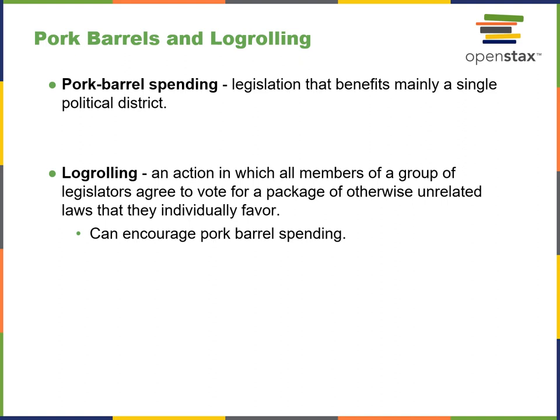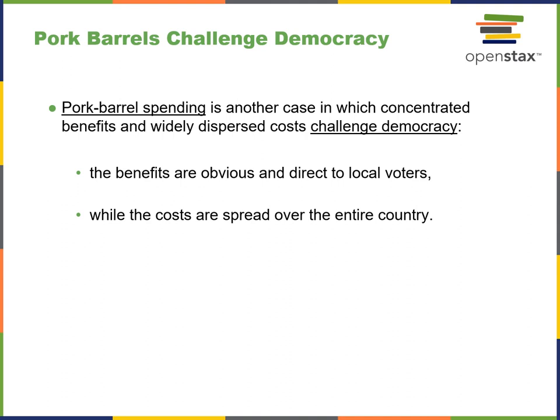Log-rolling is an action where all members of a group vote on a package of otherwise unrelated laws that they favor. This is the ad hoc stuff thrown into a bill alongside important legislation — like spending for the Kennedy Center when 22 million people are freshly unemployed and desperately need money and food. Pork barrel spending is another case of concentrated benefits and wildly dispersed costs that challenge democracy. The benefits are obvious and direct to local voters, while the costs are spread over the entire country.